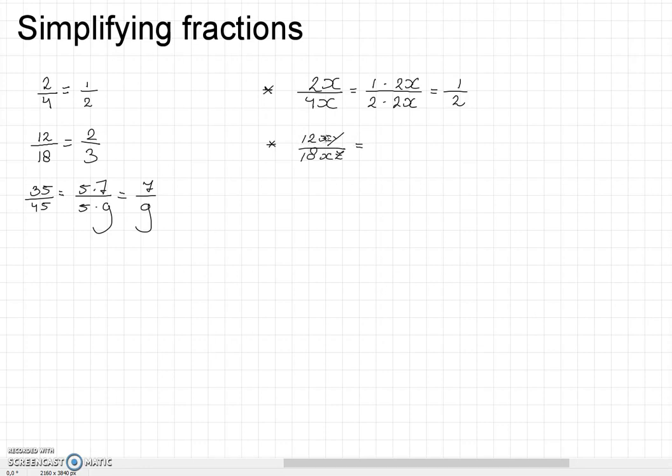The fraction 12xy divided by 18xz we can write as 2y times 6x divided by 3z times 6x. We can then divide the numerator and denominator by 6x, and we end up with 2y divided by 3z.